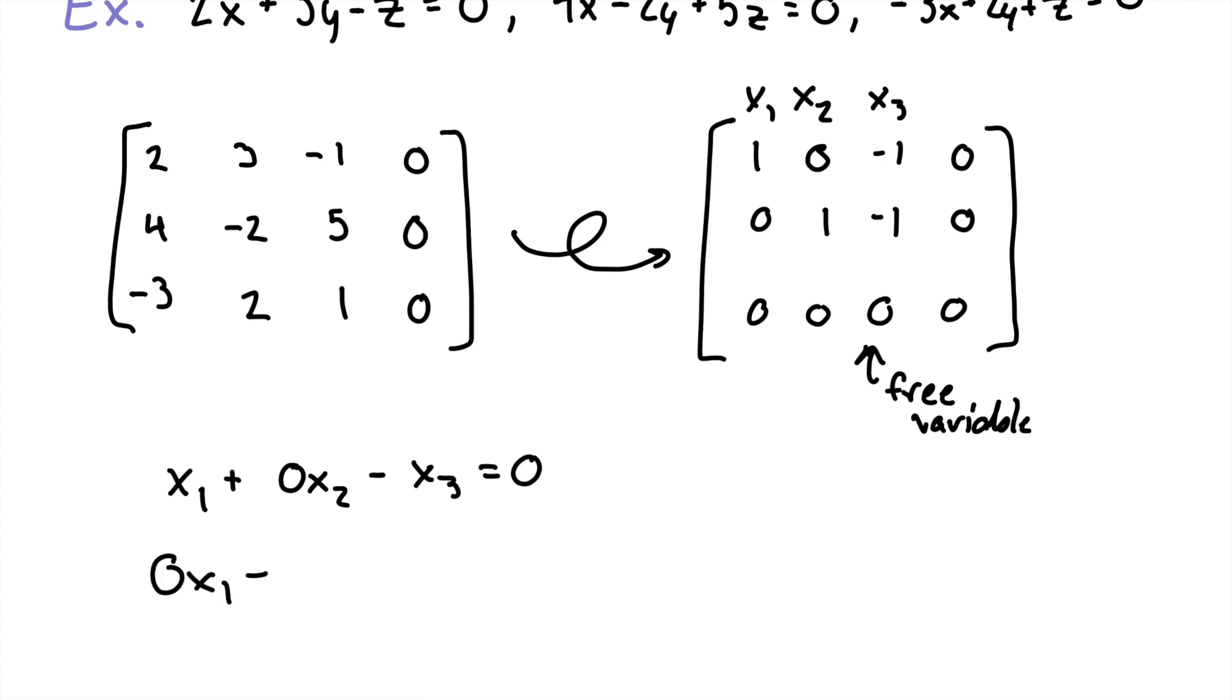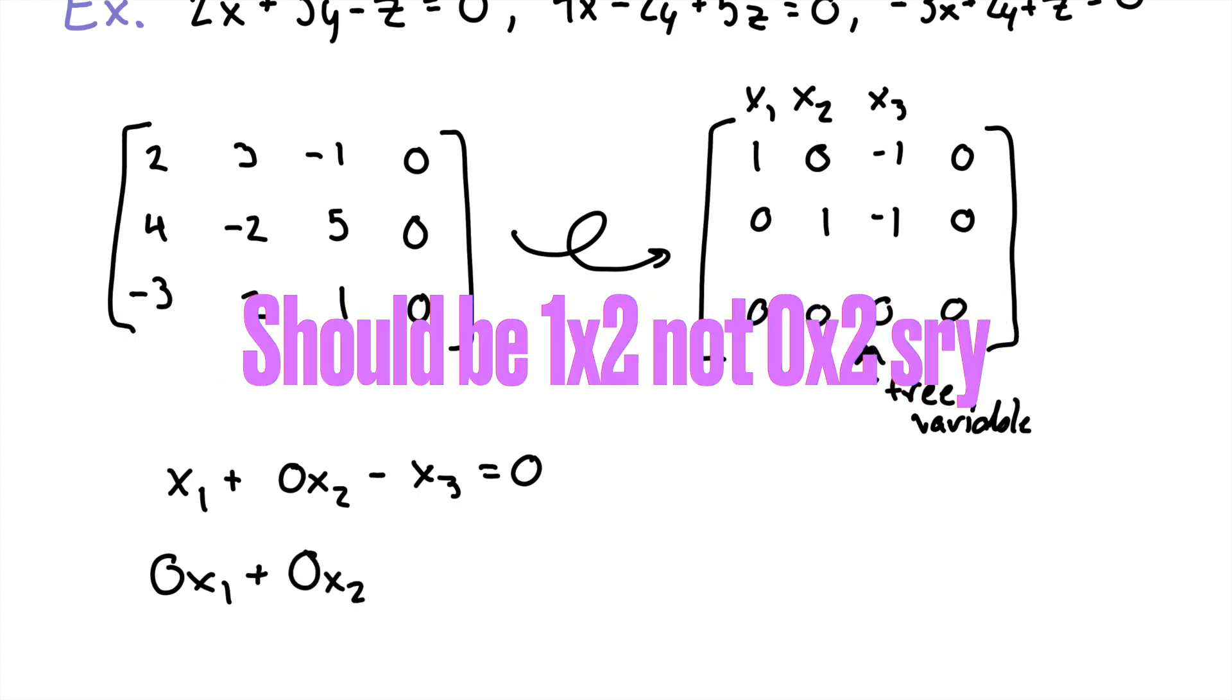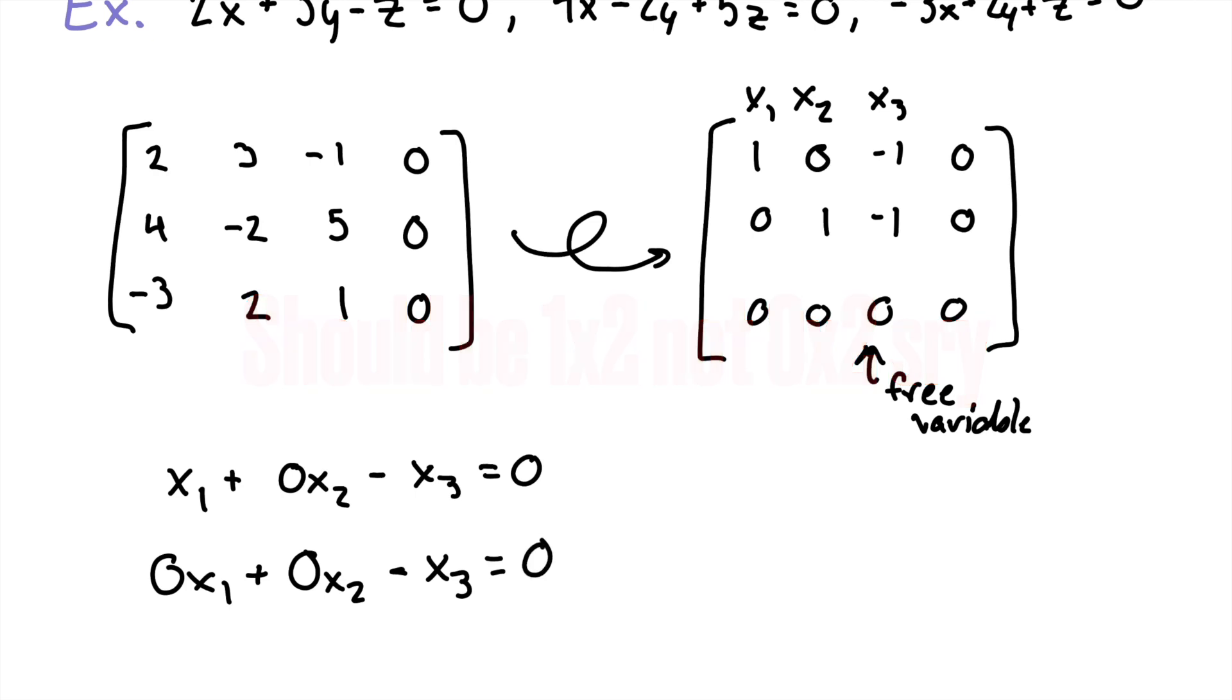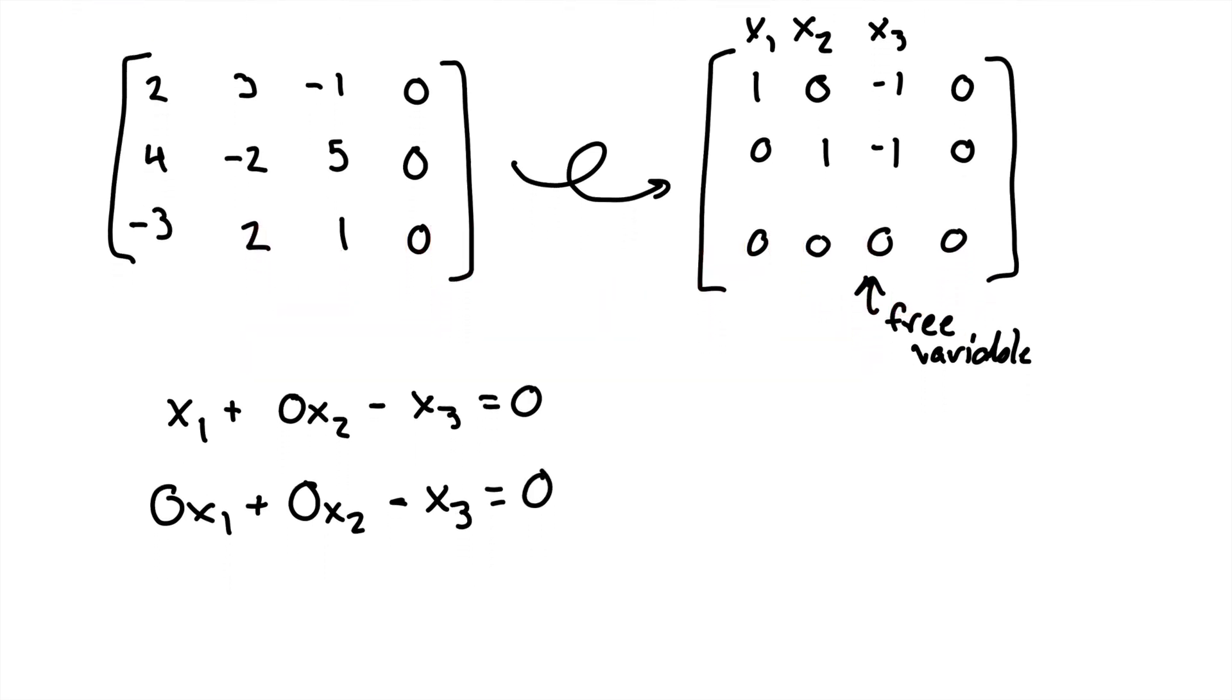0X1 plus 0X2 minus X3 equals 0. And we can ignore the last one because it's just a row of zeros.